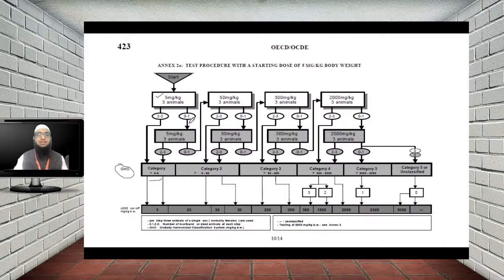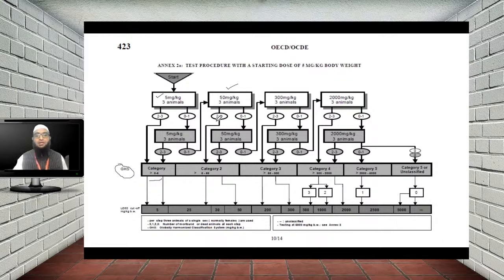If there is no death or only one death — meaning more than 50% of animals survived — you proceed to the next higher dose. Give 50 mg/kg to an additional 3 animals. If death occurs in 2 to 3 animals at that dose, classify it as category 2 (5–50 mg/kg). If still no death, proceed to 300 mg/kg and then 2000 mg/kg.